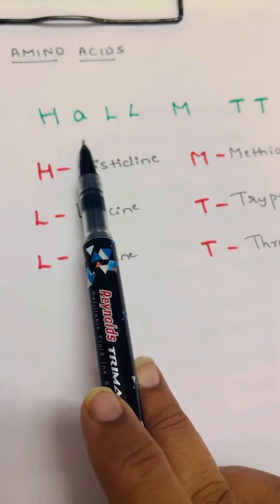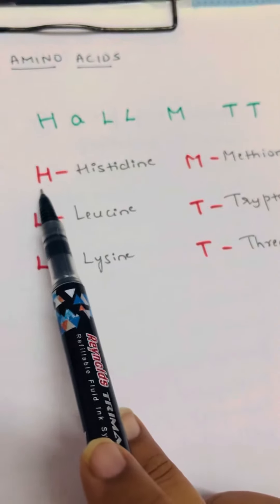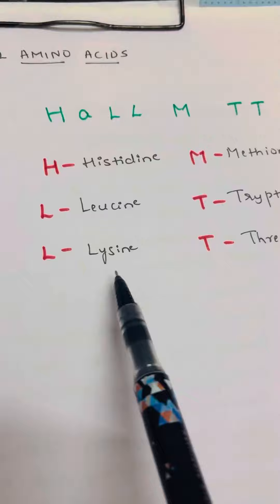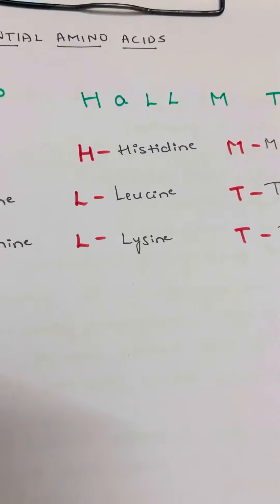So this is the trick: VIP HALL MAY TT. The 'A' is just to complete the word. H for Histidine, Leucine, Lysine. Thank you.